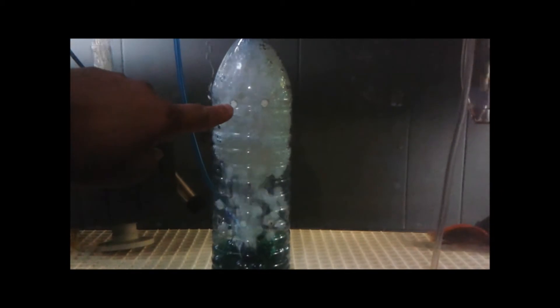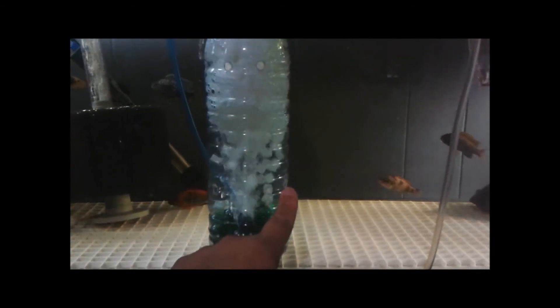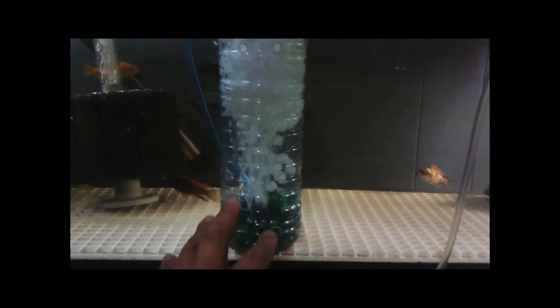Basically what I did was I took a 1.5 liter bottle, soldering iron, put these holes in around the circumference of the bottle, some holes down here going around the bottom, just to let water in to intake. The marbles are to weight it down.